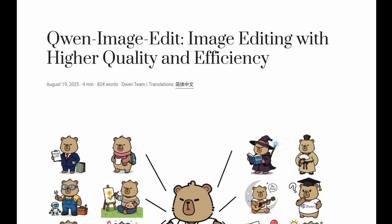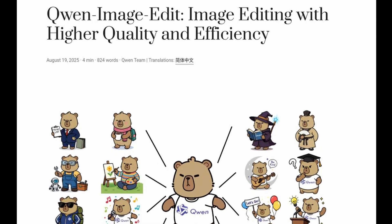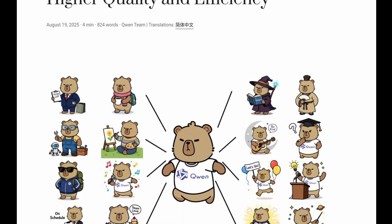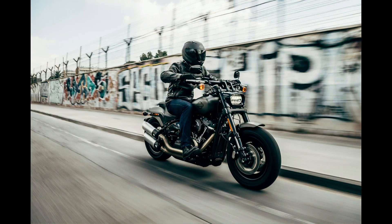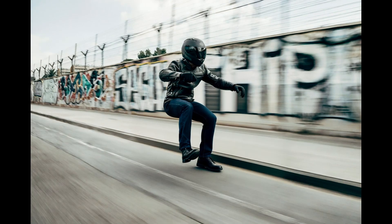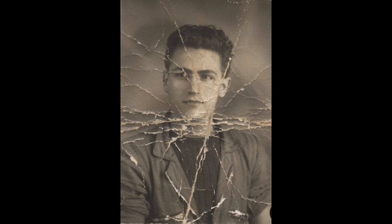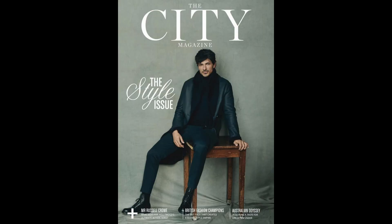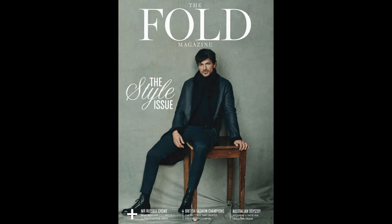Hey guys, recently Alibaba released their latest image editing model called QN Image Edit. With this model, we can do a lot of editing tasks, for example: adding or removing objects, changing backgrounds, photo retouching, transforming images to various art styles, restoring old photos, and editing or adding English or Chinese text to photos.